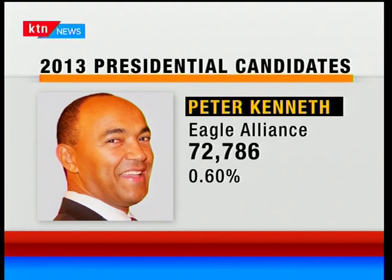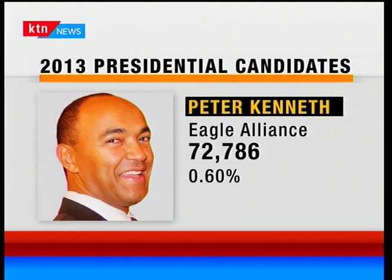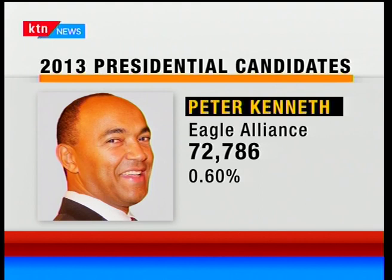Paul Mwitte ran but is now just playing a role as a lawyer. Peter Kenneth, who ran under the Eagle Alliance garnering 72,000 votes, is not running for president this time. He sought the Jubilee nomination for the Nairobi gubernatorial seat, but Mike Mbuvi Sonko won that nomination, so Kenneth decided to go independent. His goal now is to become Nairobi's governor.